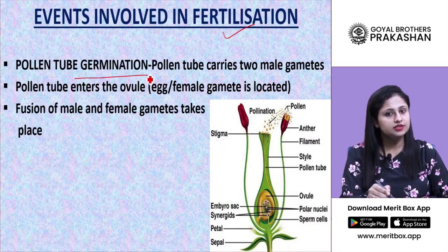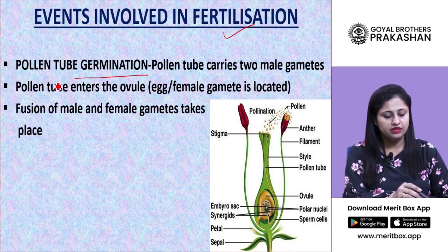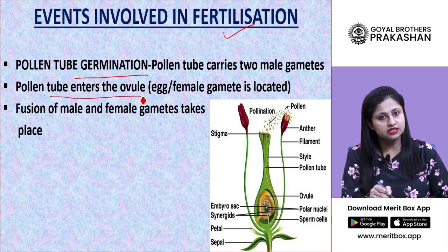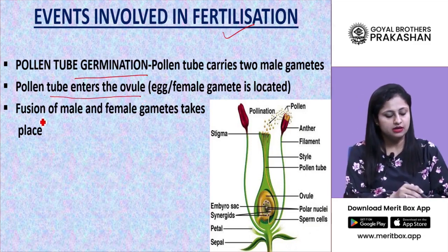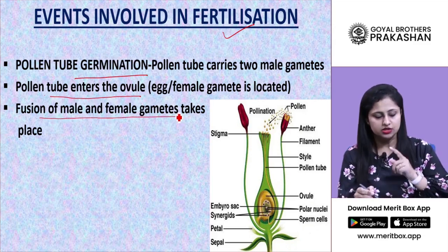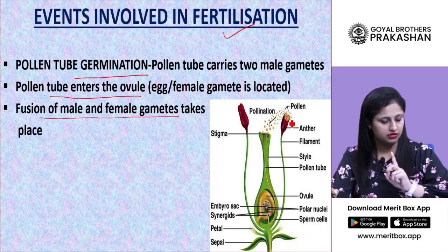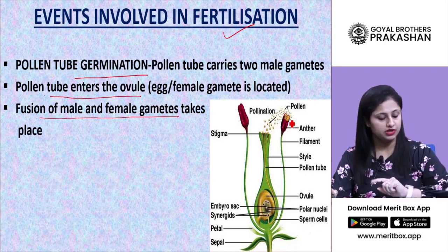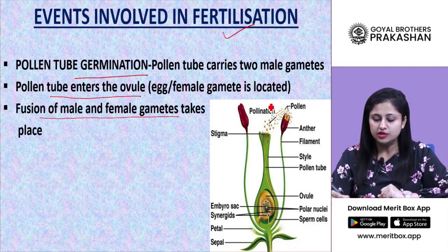There are some events involved in fertilization. Number one: pollen tube germination. Number two: pollen tube enters the ovule, that is the female gametophyte. Number three: fusion of male and female gametes. The pollen tube carries two male gametes.